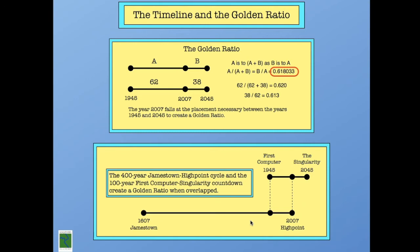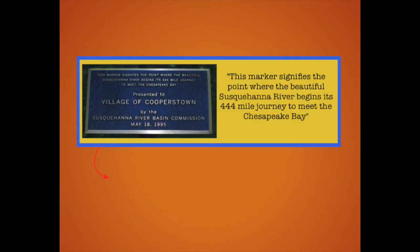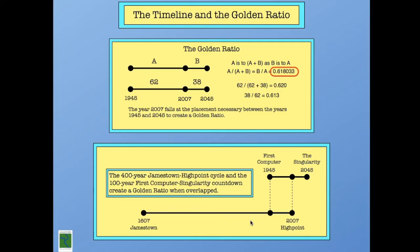The second thing I want to point out is if you combine the two time frames from 1607 to 2045, we get to 438 years, which is very close to 440 years and pretty close to 444 years. For people who really get into numbers, there's some significance there. I also want to point out that the marker at the source location of the Susquehanna River lists it at 444 miles. So again, we're seeing another synchronicity.